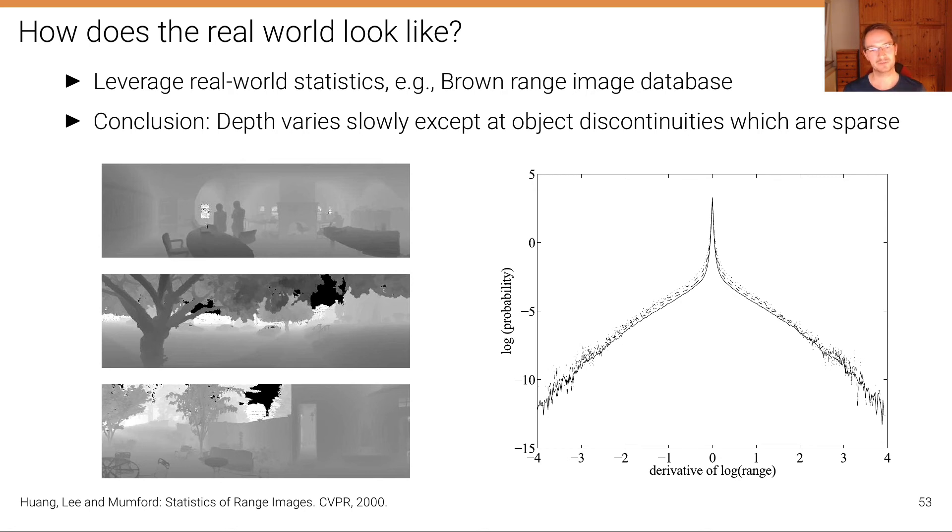If we look at these depth images, then we can find very fundamental basic principles about the statistics of these images. What's already evident from the images is also evident from this plot, which shows us the derivative of the range or of the log range and the probability for each of these values. What we see from the images is that there's a lot of smooth surfaces. So in most cases, for most adjacent pixels, the depth actually varies very slowly, except at object discontinuities, where the depth varies very quickly. But depth discontinuities are very sparse. In other words, the number of pixels where we have a depth discontinuity is very small with respect to the total number of pixels in the image. For most pixels, the neighbors are looking the same, except for these discontinuities.